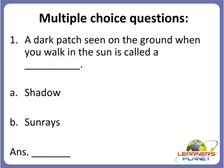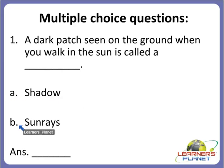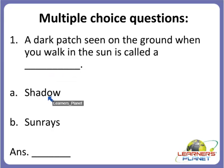Now we will move on to the next activity — multiple choice questions. The first question: a dark patch seen on the ground when you walk in the sun is called a blank. Is it A) shadow or D) sun rays? That dark patch seen on the ground is called a shadow. So A is the correct answer.